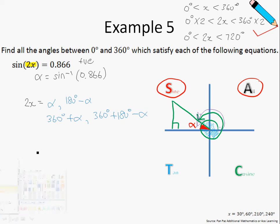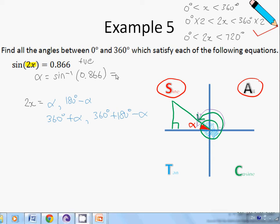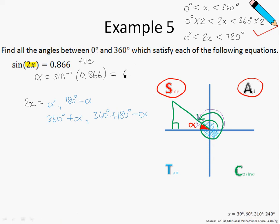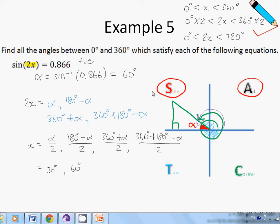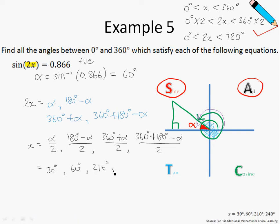We work out alpha by pressing sine inverse of 0.866 into the calculator, giving alpha equals 60 degrees. Working out x: x equals alpha over 2, giving 30 degrees; 180 minus alpha over 2, giving 60 degrees; 360 plus alpha over 2, giving 210 degrees; and 360 plus 180 minus alpha over 2, giving 240 degrees. So we have four answers: 30°, 60°, 210°, and 240°. That brings us to the end of example 5 and chapter 12.2.